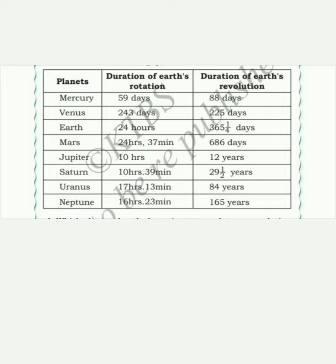The second planet is Venus. Venus takes 243 days for rotation and 225 days for revolution. Observe carefully students — here rotation is 243 days and revolution is 225 days. Venus's rotation time is more than its revolution.